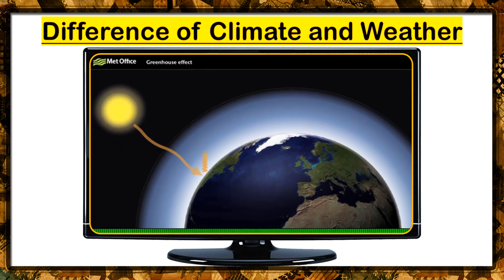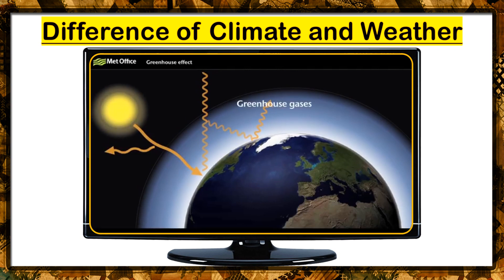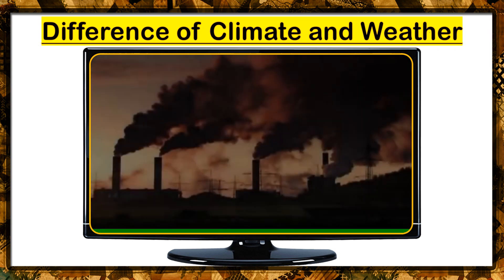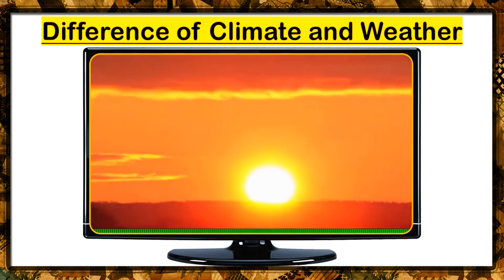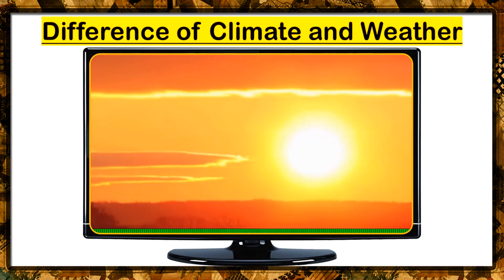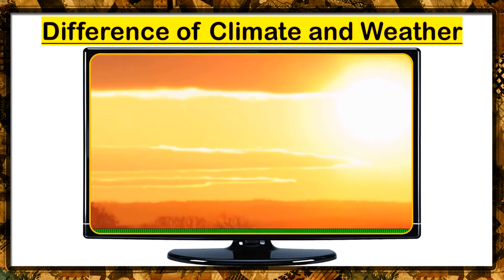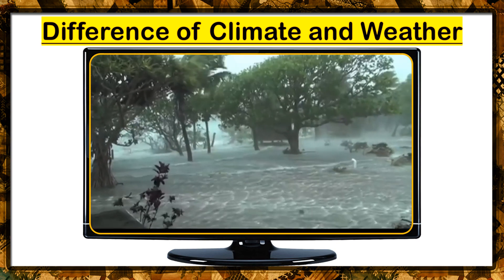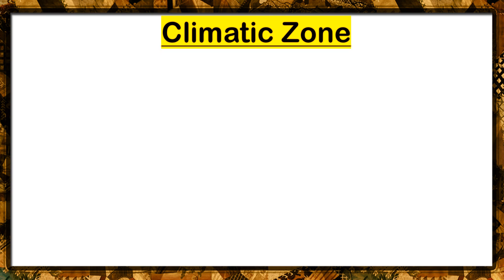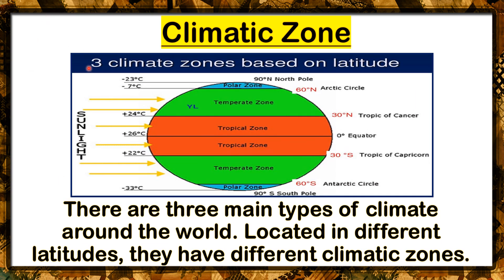The gases responsible for this effect — such as water vapour, carbon dioxide, and methane — are called greenhouse gases. Scientists explained the heat-trapping effects of greenhouse gases more than 150 years ago. They discovered that without the greenhouse effect, the Earth would be about 30 degrees Celsius cooler, making it uninhabitable to most forms of life. Greenhouse gases are so effective at keeping the Earth warm that any changes will affect the Earth's temperature. Now, let us study about the climatic zones. There are three climatic zones based on latitude: polar zone, temperate zone, and tropical zone.